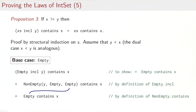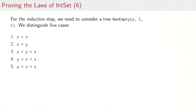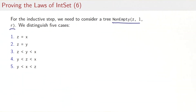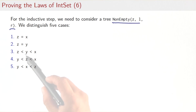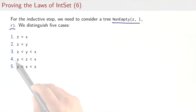For the inductive step, we have a tree non-empty with root Z and subtrees L and R. Unfortunately there are five different cases to consider: the root Z equals X; Z equals Y; Z is smaller than both Y and X; Z is between Y and X; and Z is larger than both Y and X.